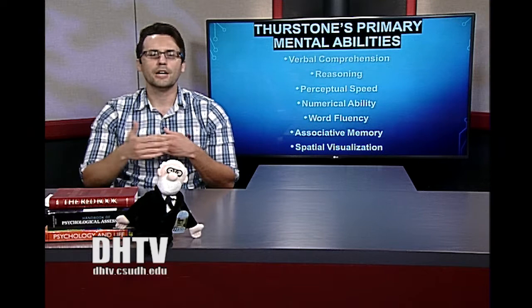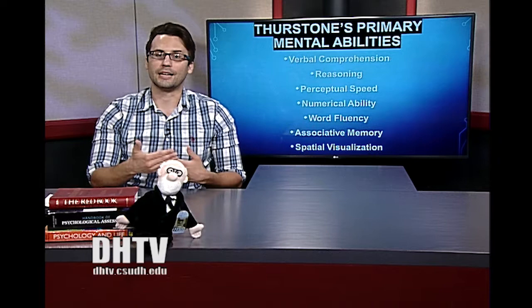To Thurstone, someone could be intelligent in one of these primary mental abilities while lacking in another. That doesn't mean they're not intelligent — they're simply intelligent in a different capacity. One person may be great with numbers, another may be a strong visual learner, and another may excel with language.